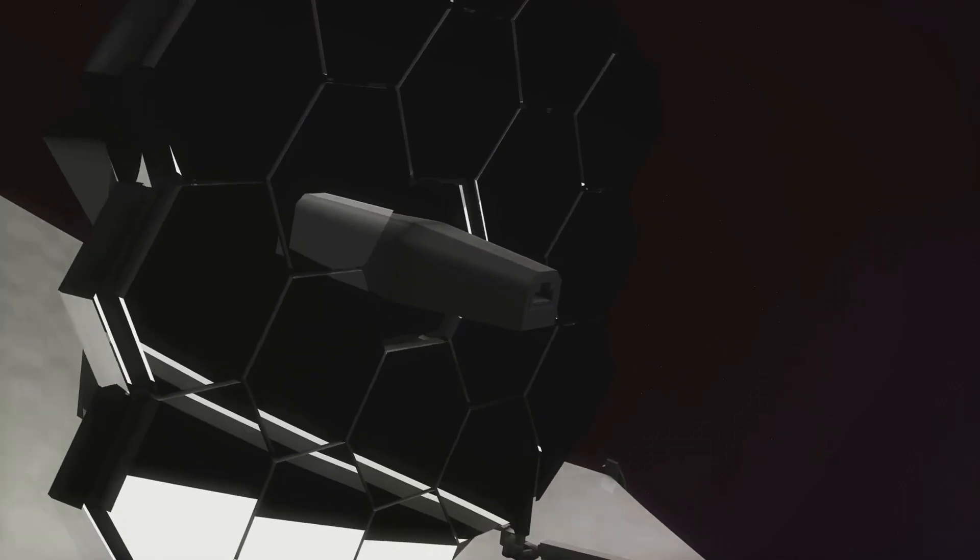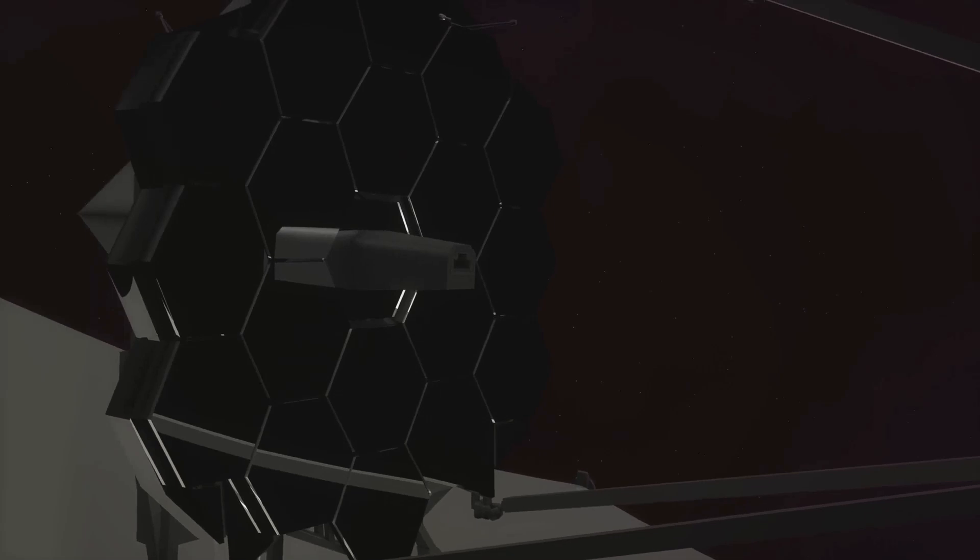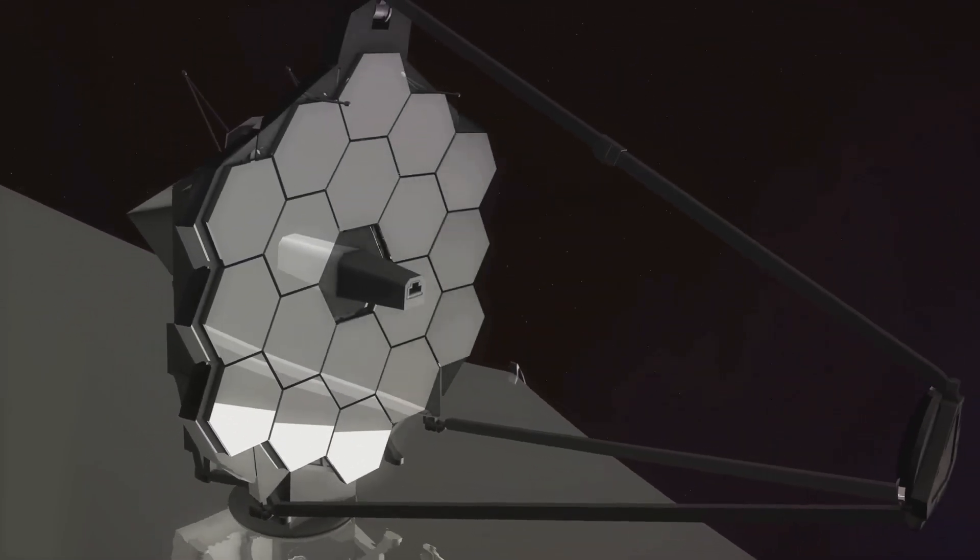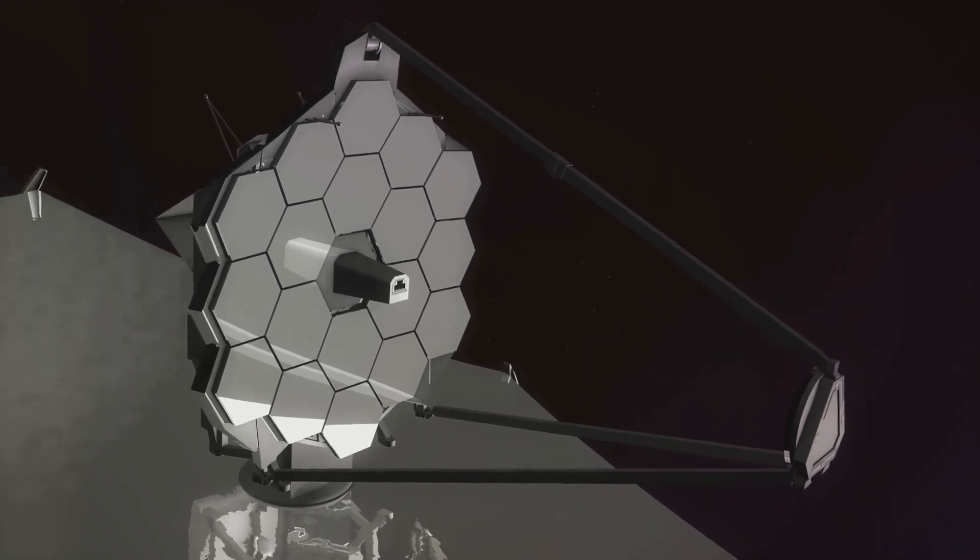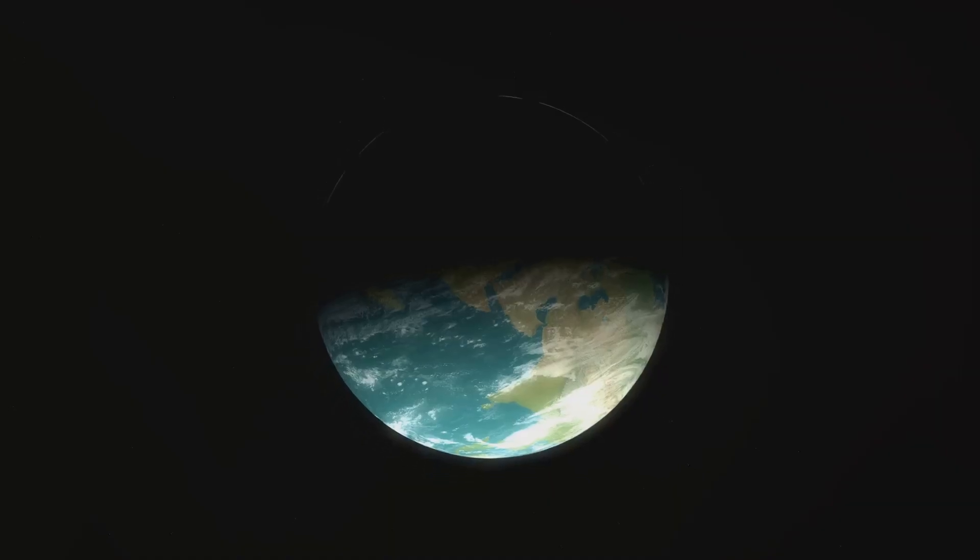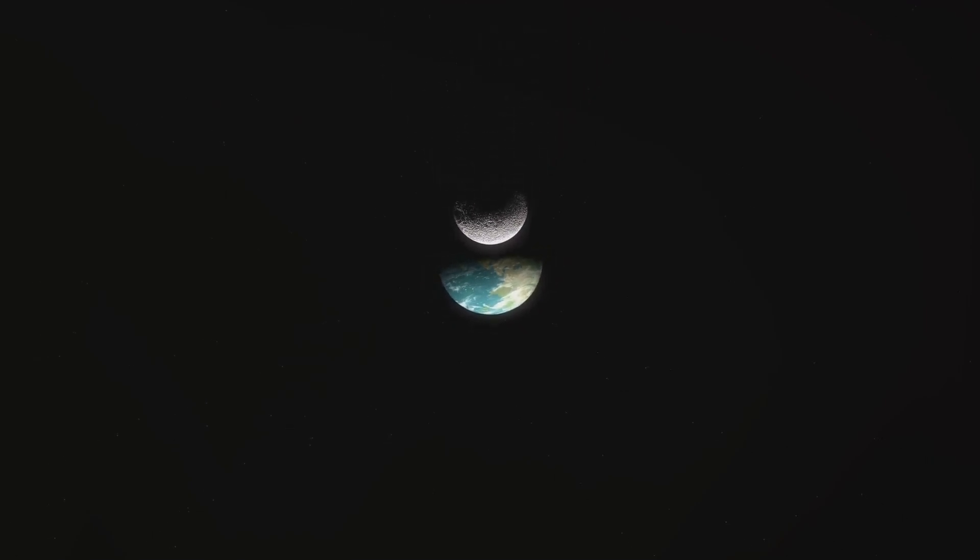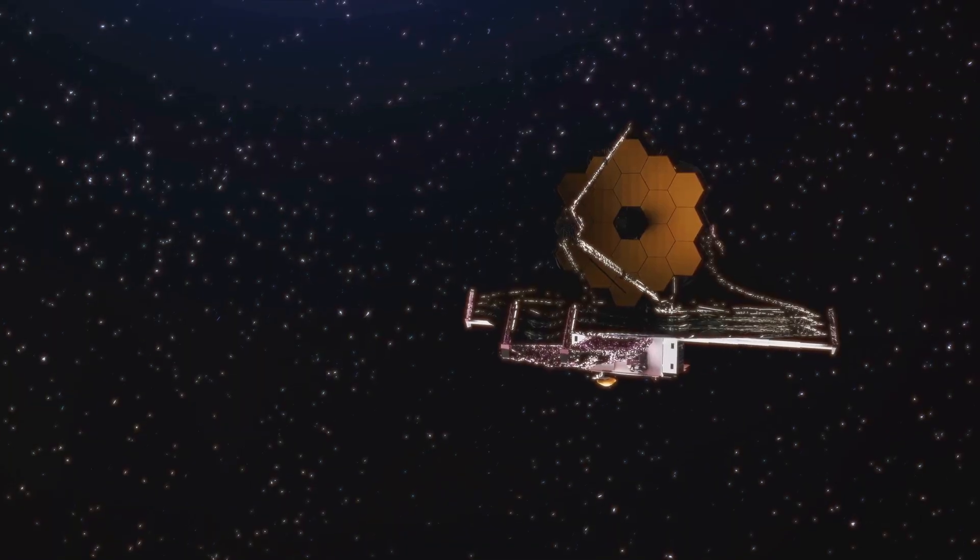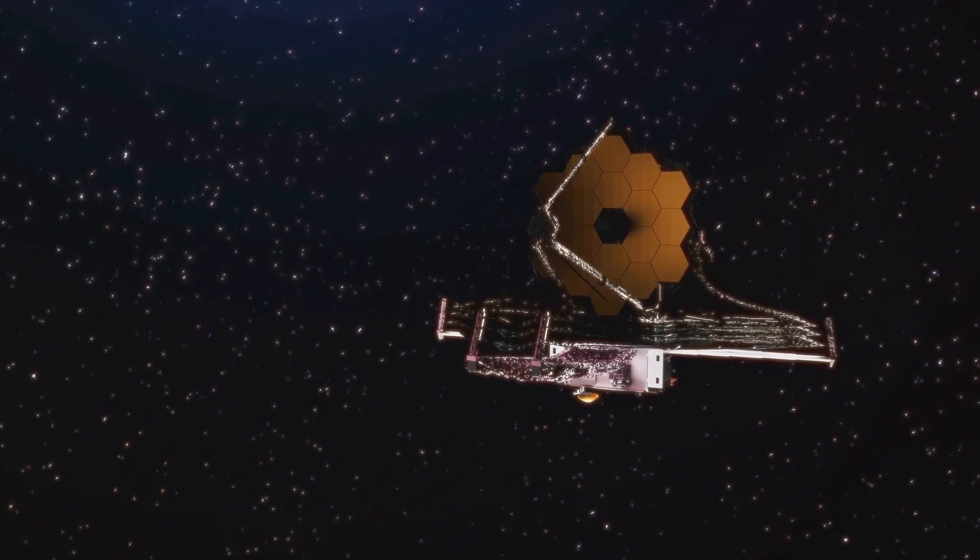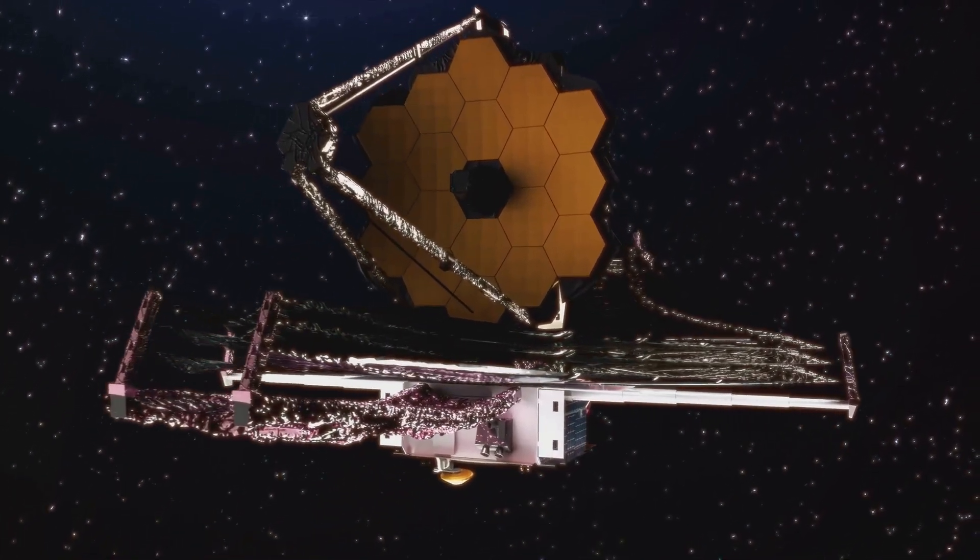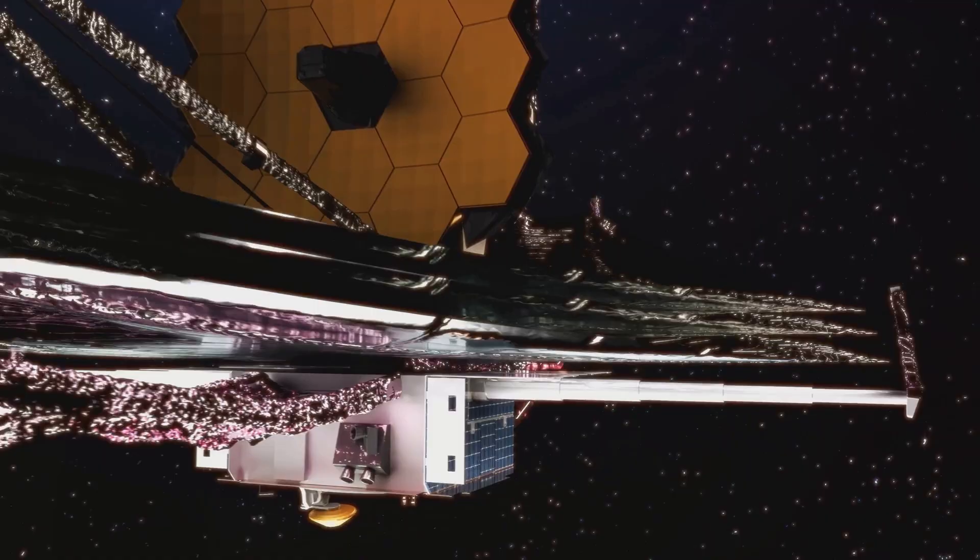The JWST is designed to observe the universe in infrared light. This allows it to peer through dust clouds that block visible light, revealing stars and galaxies that have remained hidden from us until now. And the telescope isn't just looking, it's listening. Well, in a manner of speaking, the JWST can analyze the light from distant stars and galaxies to determine their chemical composition, temperature, and even their velocity. This kind of detailed information can help us understand the life cycles of stars, the formation of galaxies, and the evolution of the universe itself.